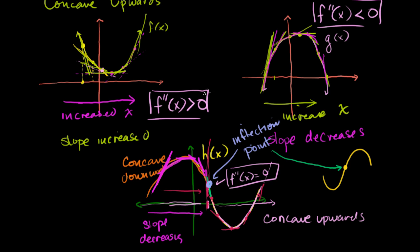The point at which you switch from a positive second derivative to a negative one, or from a negative one to a positive one, is what is called an inflection point.